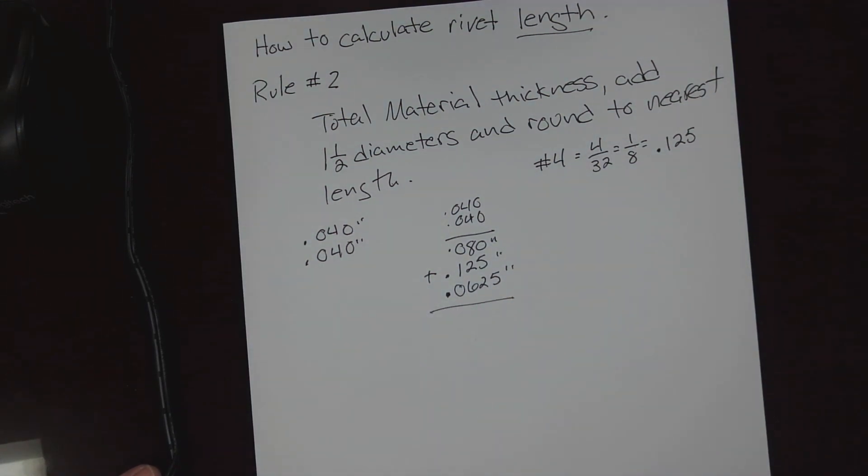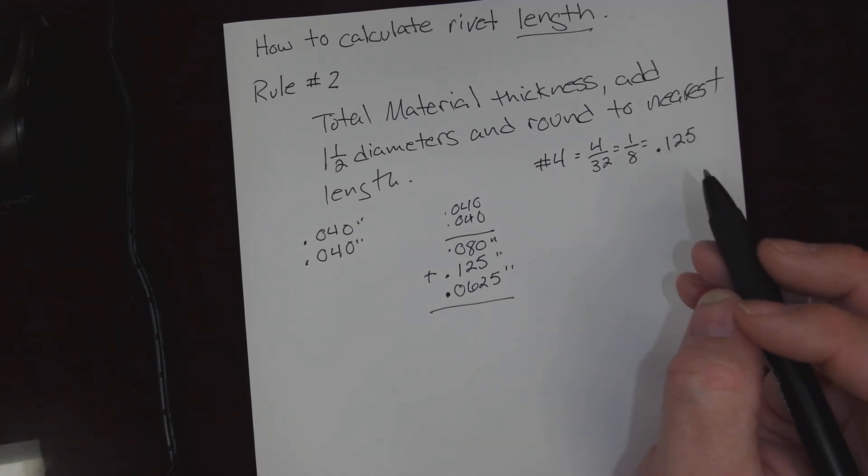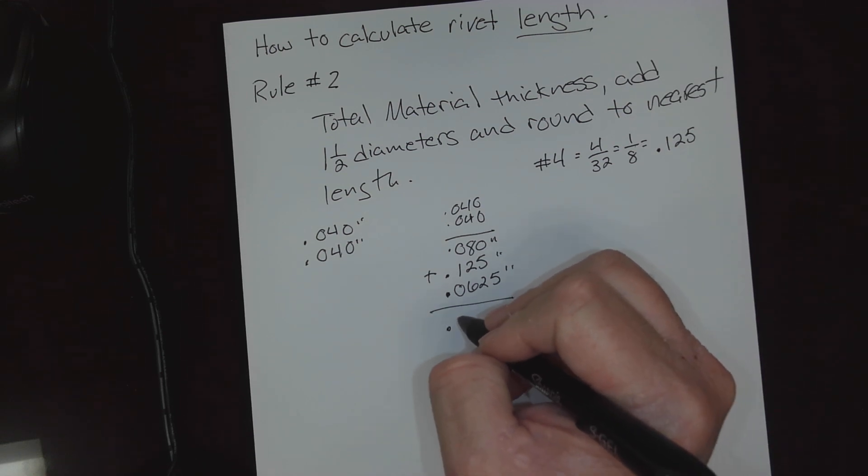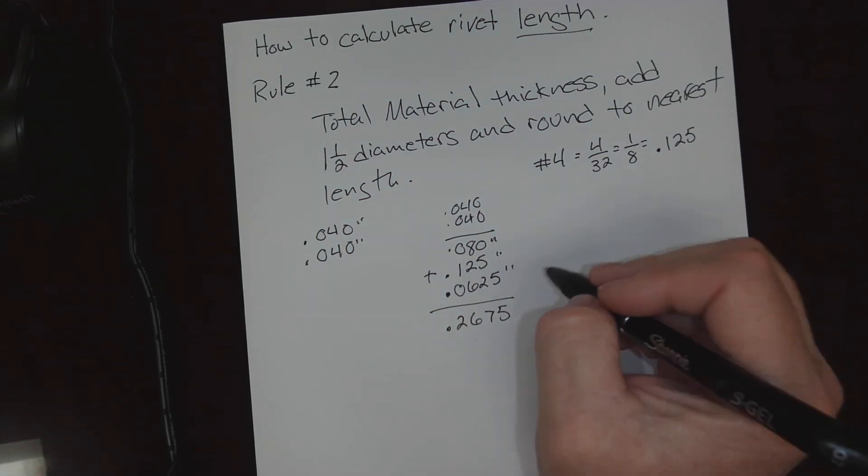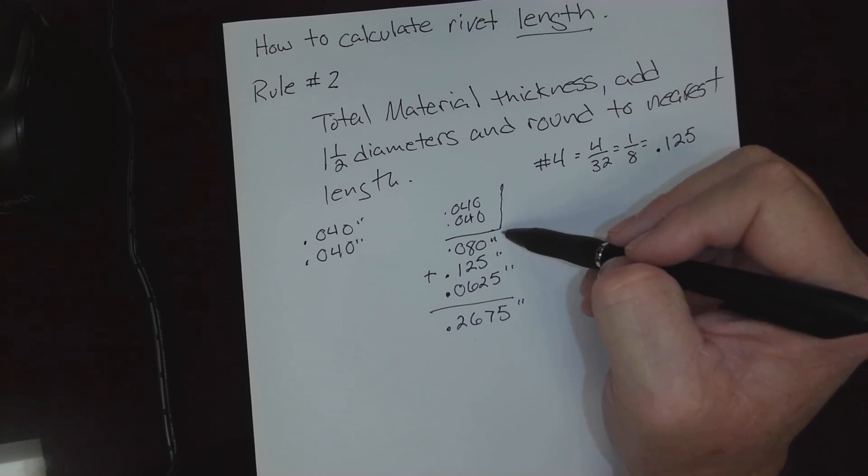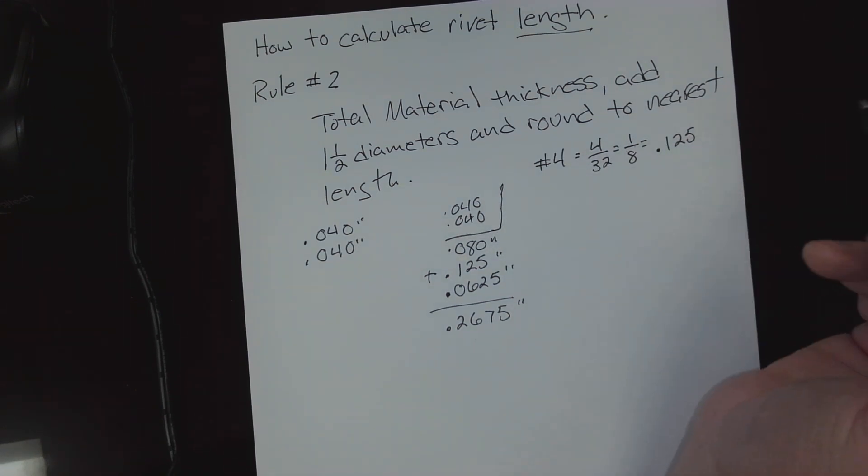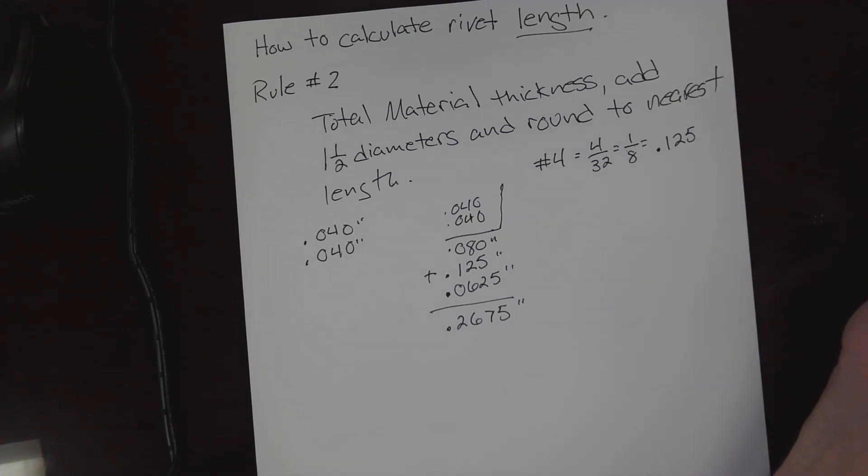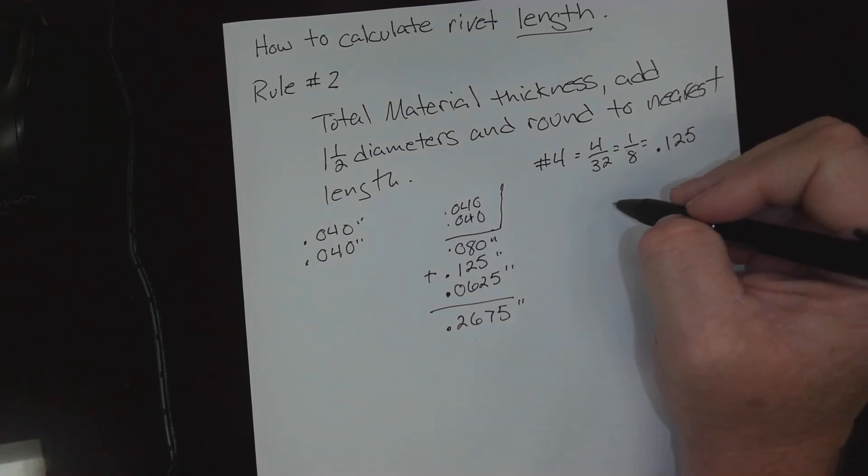Now if we add all of these together, we're going to end up - let me do some calculations so I don't make a mistake - 0.080 plus 0.125 plus 0.0625 equals 0.2675. Now that would be our total stack up plus one and one half diameter. To get our total, we would need to round to our nearest fraction or our nearest rivet length.